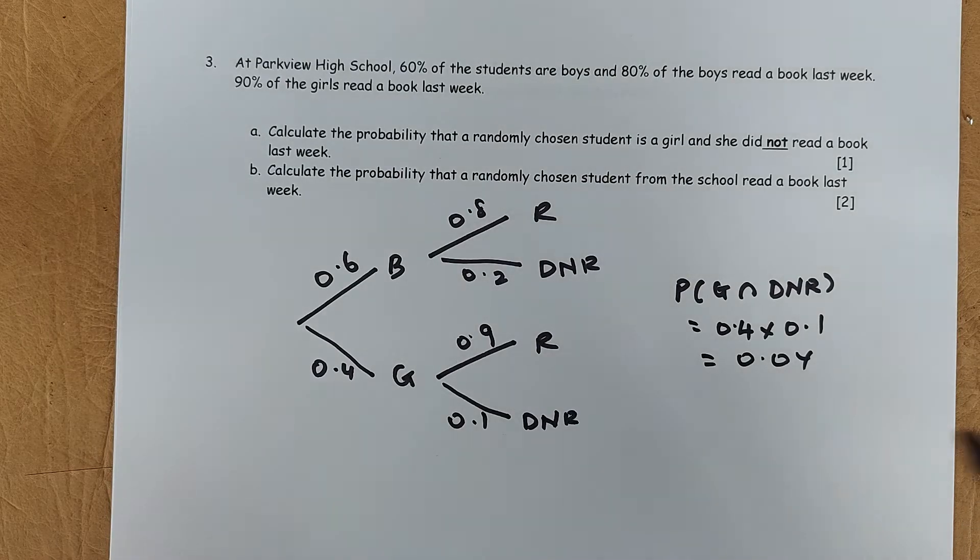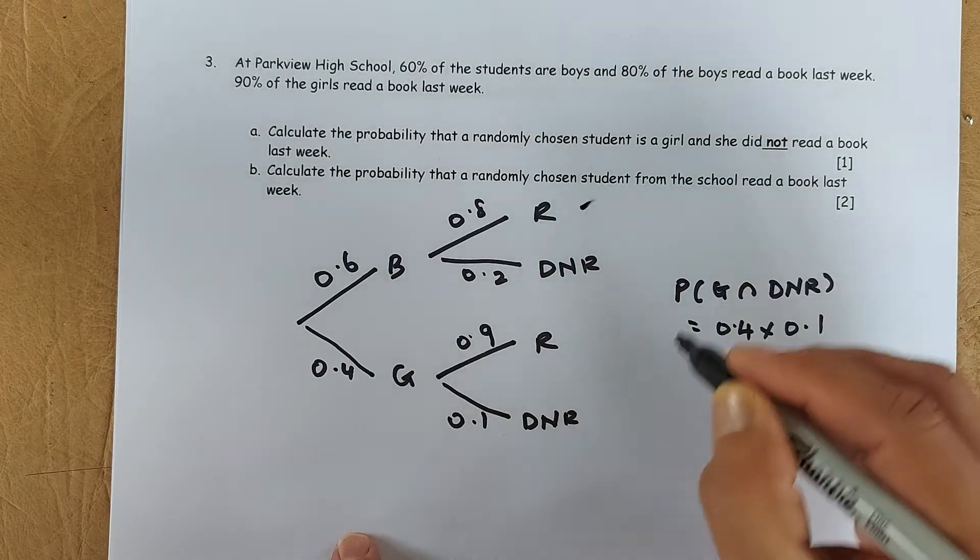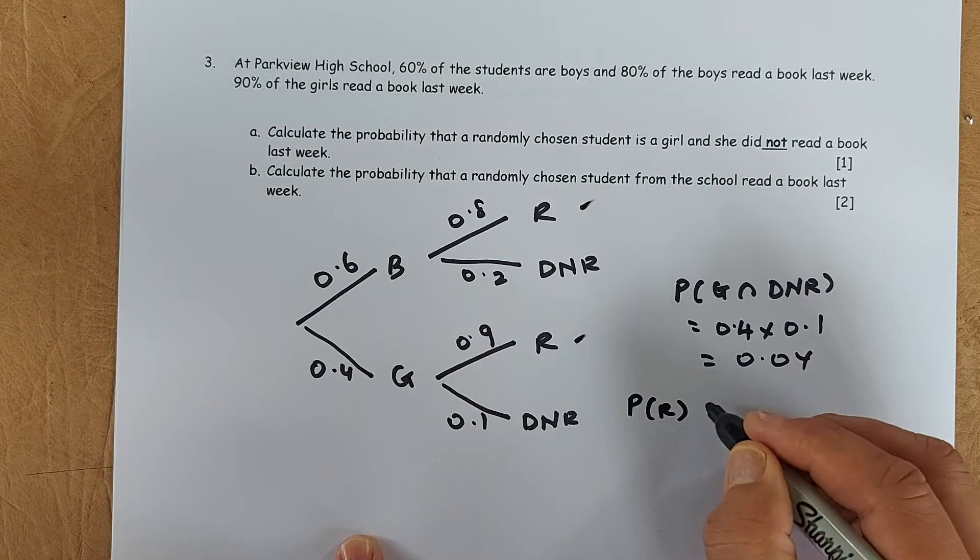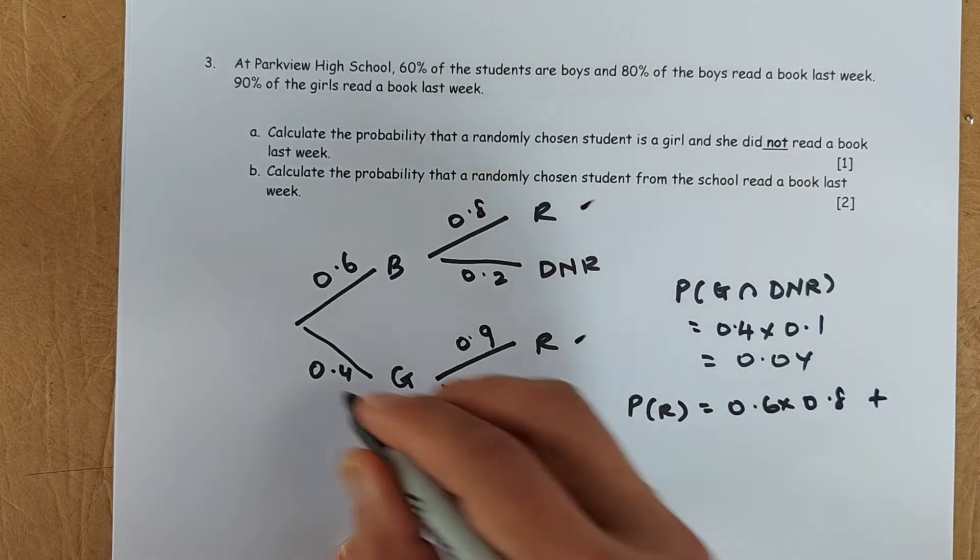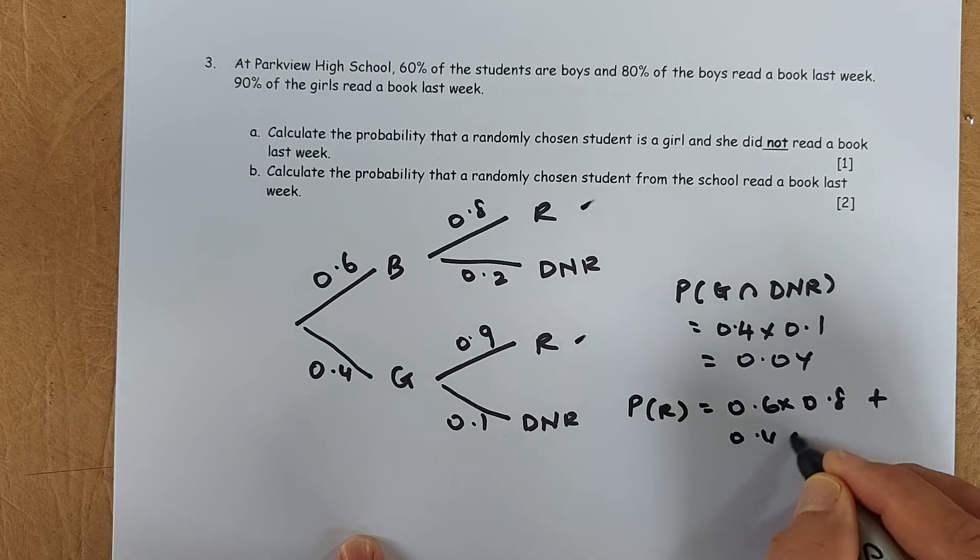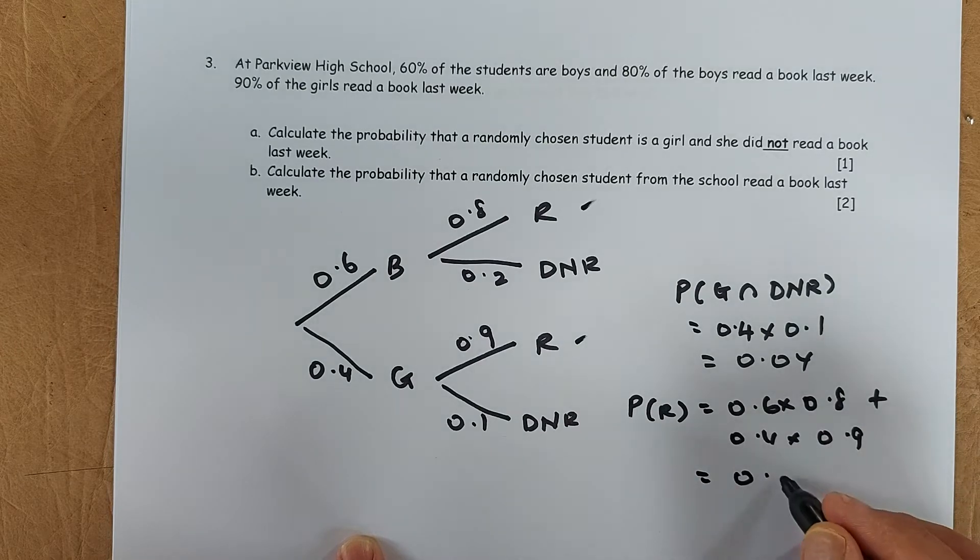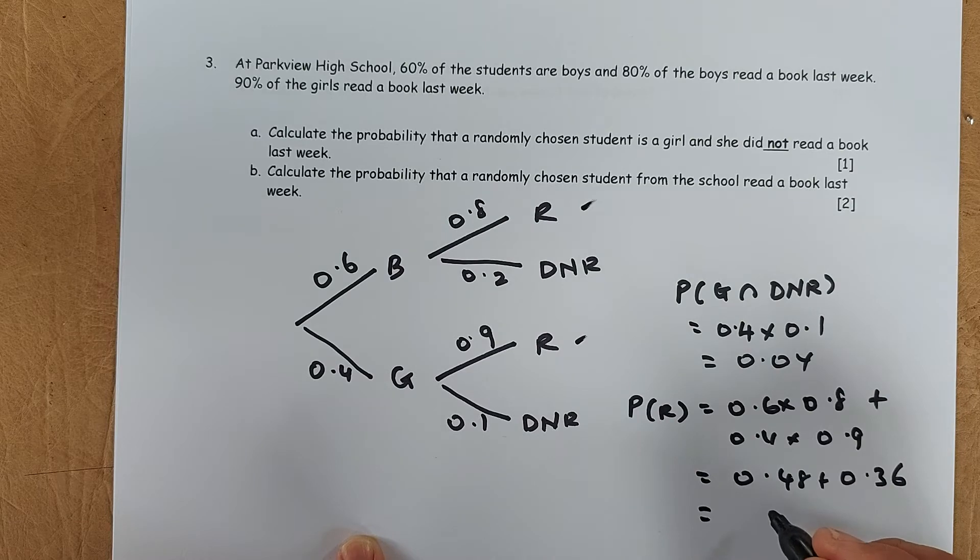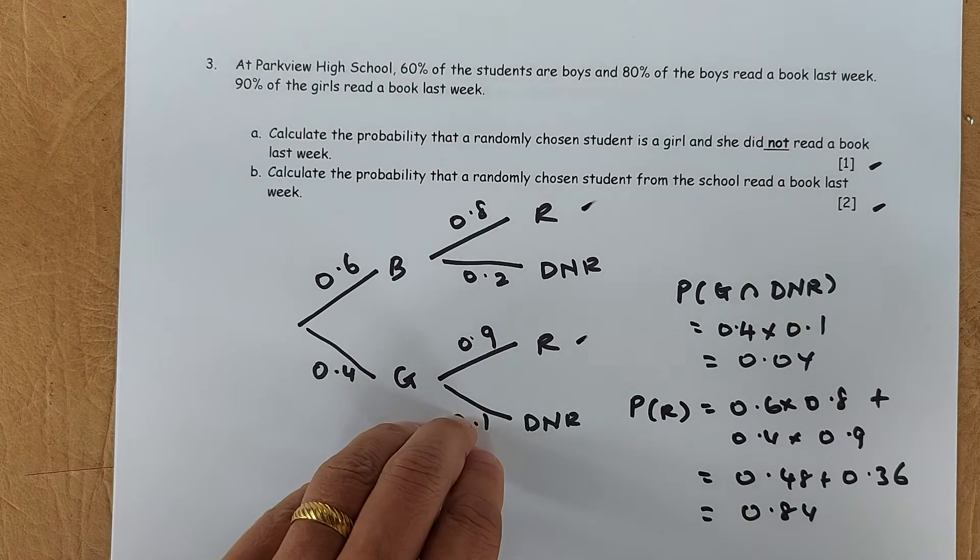Now, the next question. Calculate the probability that the randomly chosen student of the school read the book. So it could be boys will read or girls will read. So it's going to be probability of read, 0.6 times 0.8 for the boys, and you add the girls 0.4 times 0.9. So it's going to be 0.48 plus 0.36. Put your calculator and the answer is 0.84. And that will give you the first and two marks, a total of three marks in this question.